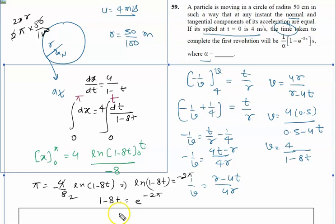Or you can say 1 minus 8t equals e raised to power minus 2π, and we write the value of t here. So 8t equals 1 minus e^(-2π), which implies that t is (1 minus e^(-2π)) divided by 8.